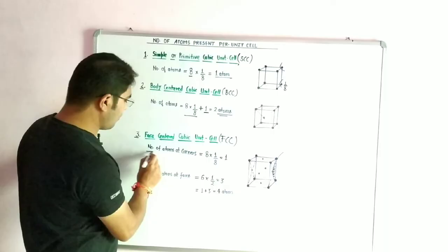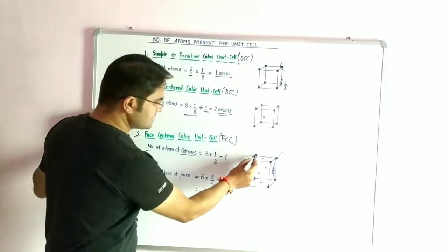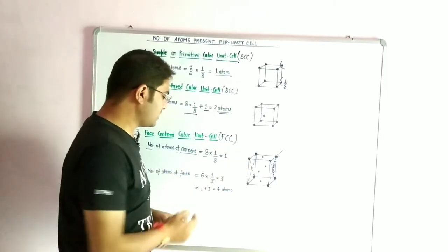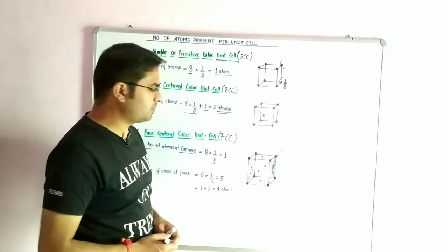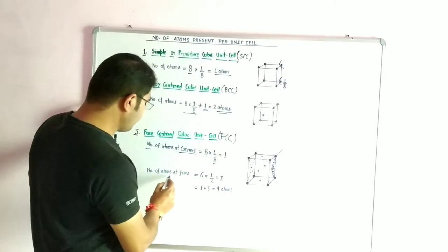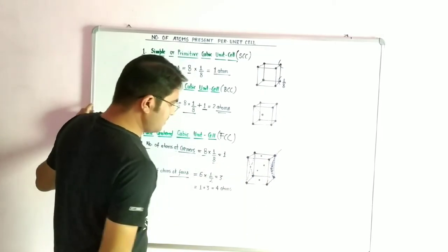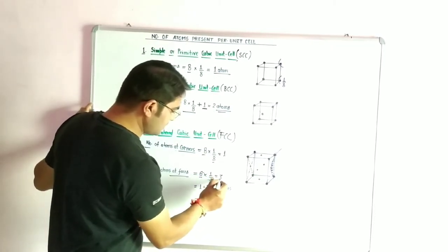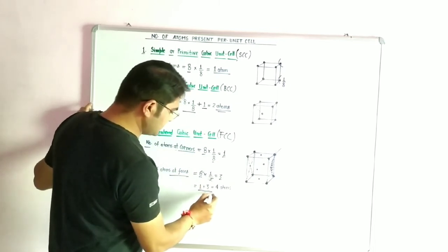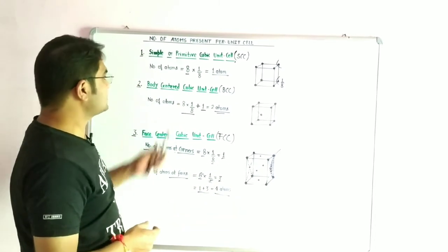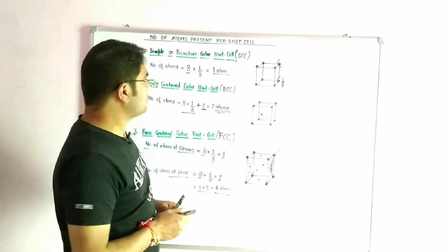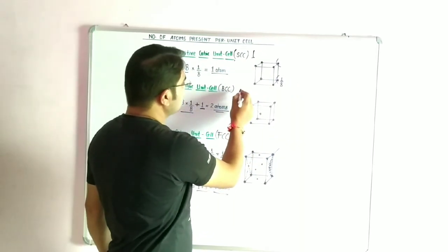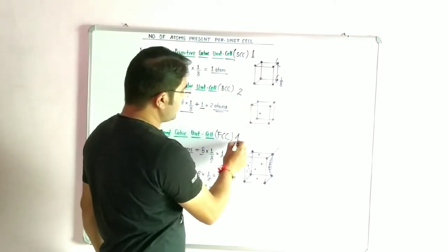The number of atoms at corners is again eight corners, and the contribution of one particle at a corner is one-eighth part of the whole cube, so that equals one. The number of atoms at the faces: there are six faces, six multiplied by one-half equals three. Overall, one plus three equals four atoms per unit cell for FCC. So to summarize: simple cubic is one atom, body-centered cubic is two atoms, and face-centered cubic is four atoms per unit cell.